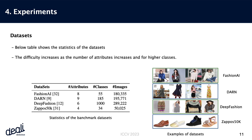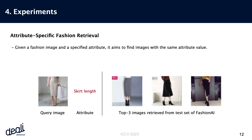Let's now delve into our experiments. Before we proceed, the table below provides a snapshot of the dataset statistics. It's important to note that the level of difficulty escalates as the number of attributes increases and for higher classes within the dataset. Within our experiments, we explore attribute-specific fashion retrieval.